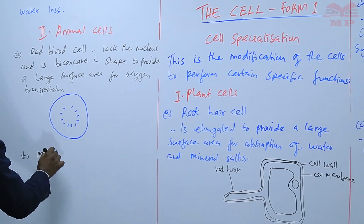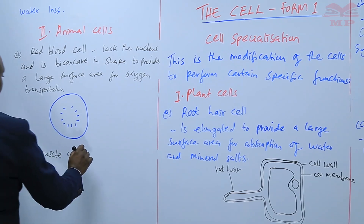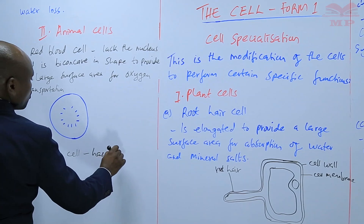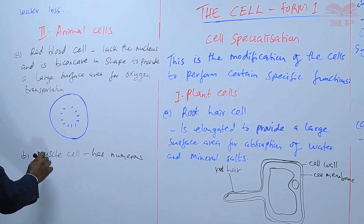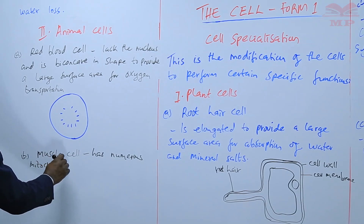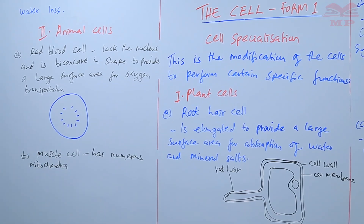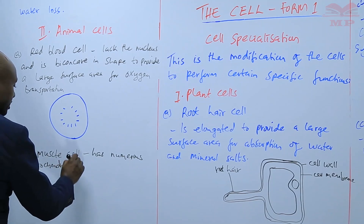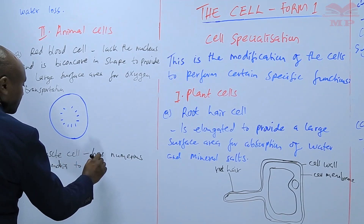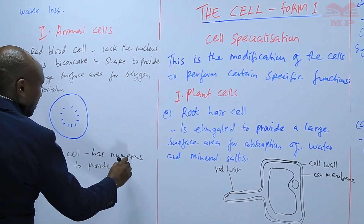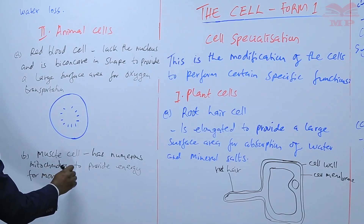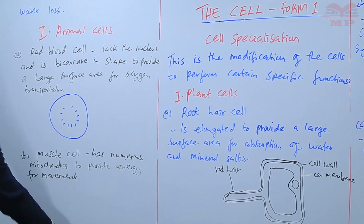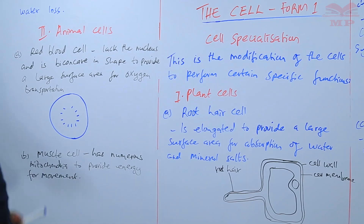Another example is a muscle cell, which has numerous mitochondria to provide energy for movement, because muscles are basically for movement. So the muscle cell is also specialized in a certain way.